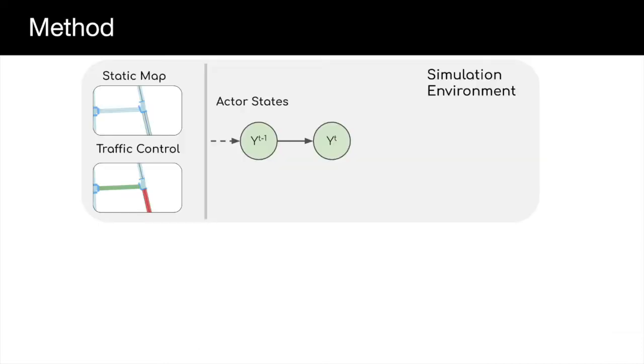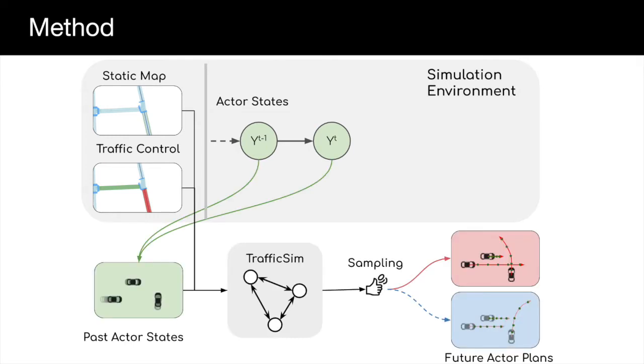In our simulation environment, we consider as input a map, traffic control, and some initial actor states. We use a graph neural network-based joint actor policy to capture interaction between all actors in the scene, and then update the simulation environment in a differentiable manner.